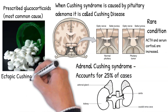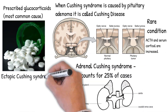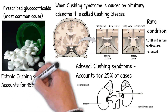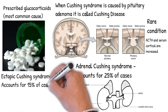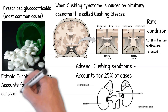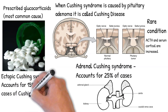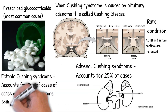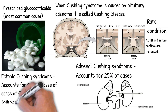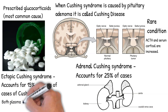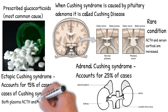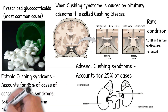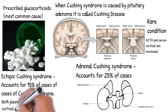Ectopic Cushing's syndrome accounts for 15% of cases, most commonly caused by a small cell carcinoma (SCC) of the lung secreting excess amounts of ACTH, leading to excess synthesis and release of cortisol by the adrenal cortex. Less common causes include excess ectopic ACTH production by the thymus (thymoma) and thyroid.